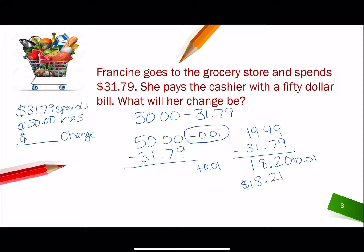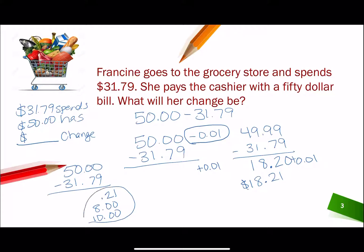If I want to count up, I can do that as well. Starting from $31.79: it takes one penny to get to $31.80, then 20 cents to get to $32.00 — that's 21 cents total. Then it takes $8 more to get to $40, and another $10 to get to $50. If I add all those up — $0.01, $0.20, $8, $10 — I get $18.21. Exactly what we got with the other method.